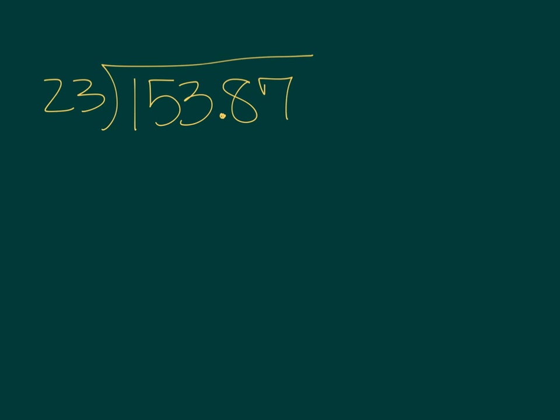Dividing a decimal number by a two-digit number is exactly the same as dividing any number by a two-digit number, except for the fact that you have to place the decimal in the quotient directly above where it is in the dividend. So I will start by placing my decimal. Now, I just divide like I normally would.